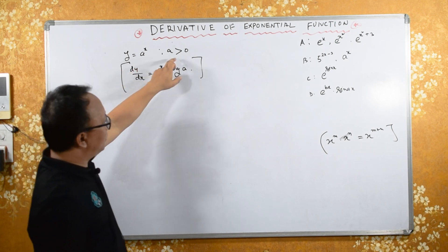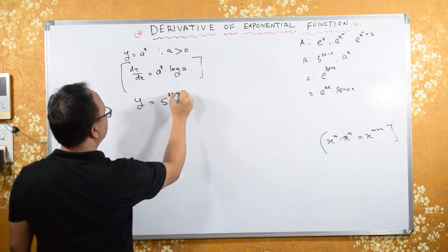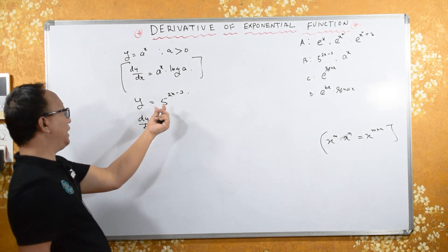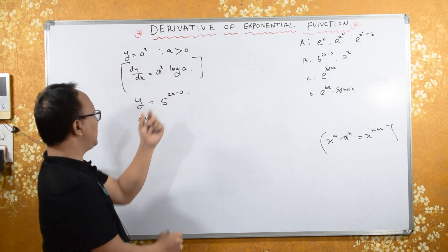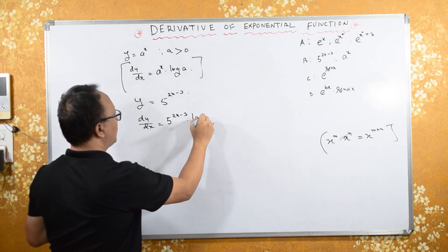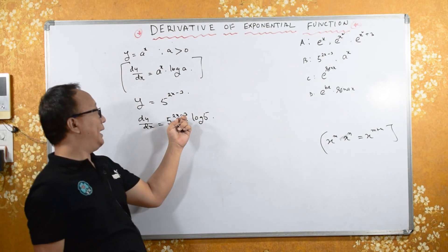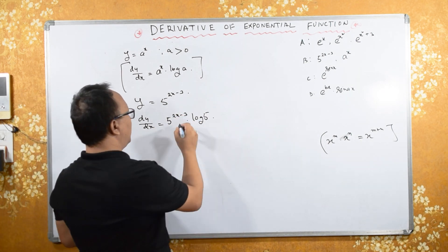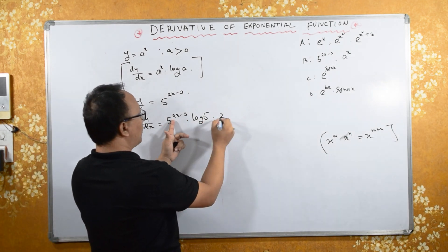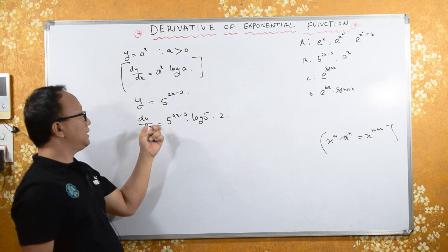Applying this formula: if y equals 5 raised to (2x minus 3), then dy/dx equals — keep 5 raised to (2x minus 3) as it is, multiplied by log of 5, then differentiate the exponent (2x minus 3) with respect to x, which gives 2. So dy/dx equals 5 raised to (2x minus 3) into log 5 into 2.